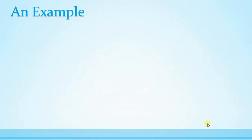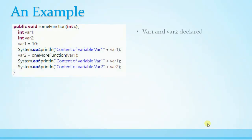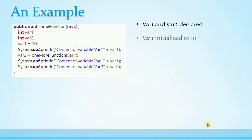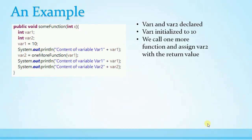Let us see this with an example. Here there are two variables, var1 and var2, inside a function called someFunction. var1 is initialized to 10, then we call a function called oneMoreFunction and we pass the variable var1 to this function. Before calling the function we have some println statements, and after calling the function we have some println statements which print the local variables.